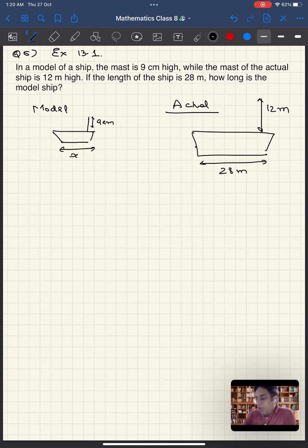So this x we are about to find, I can write in the model. So let's assume that everything was well to proportion. So when the mast is 9 centimeters, then the actual mast was 12 meters, sorry, in actual.